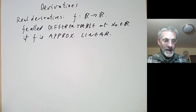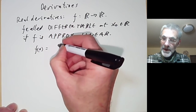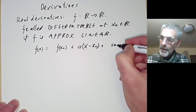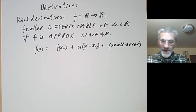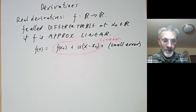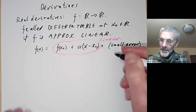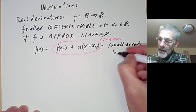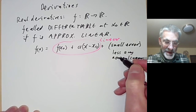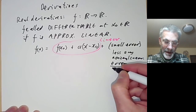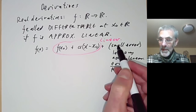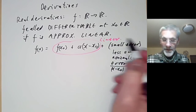Let's think what approximately linear means. It means f of x must be equal to f of x zero plus a times x minus x zero plus a small error. This bit is a linear function, and by saying the error is small we mean it should be less than any non-zero linear function. More precisely, the error divided by x minus x zero should tend to zero as x tends to x zero. Just think of this informally as being a small error.